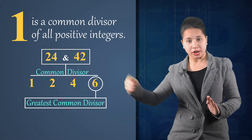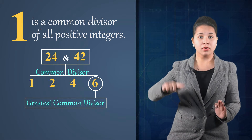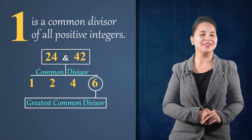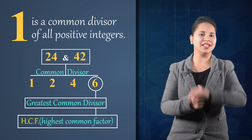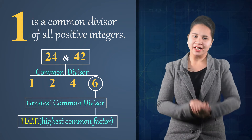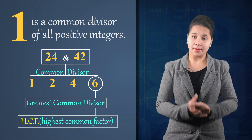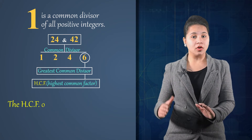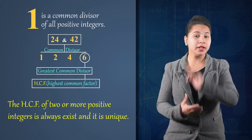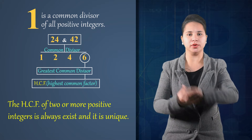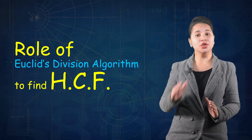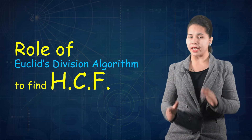Among all of them, 6 is the greatest common divisor of 24 and 42. And this greatest common divisor is known as HCF — the highest common factor. So we can say that the HCF of two or more positive integers always exists, and it is unique.